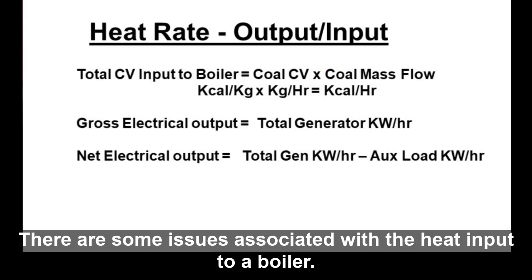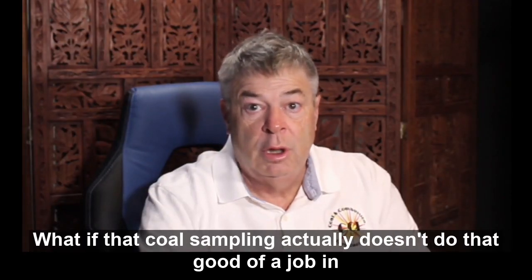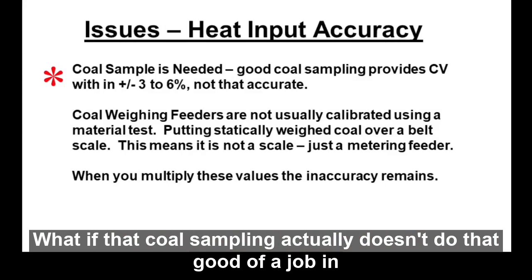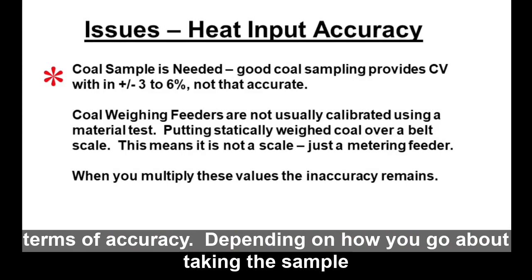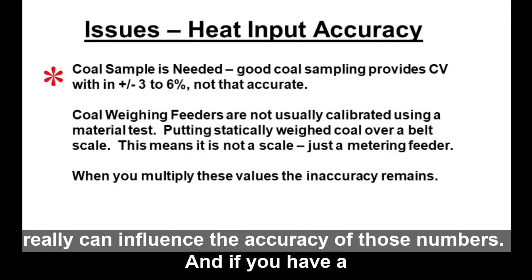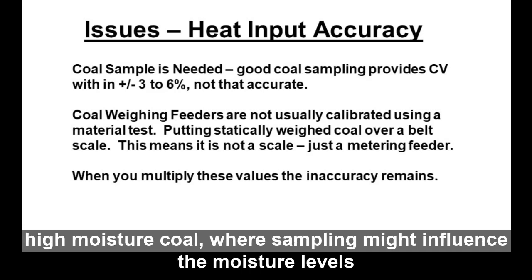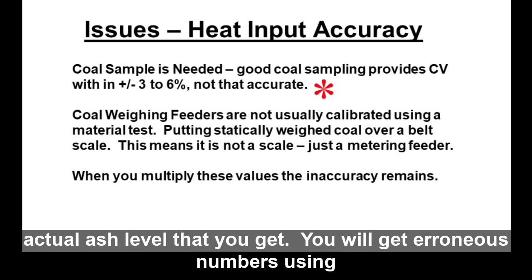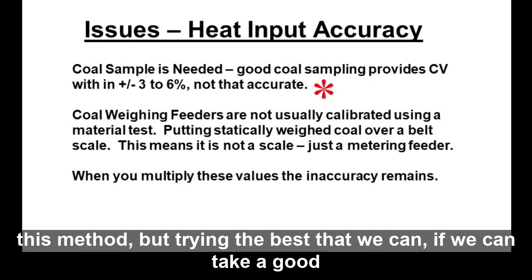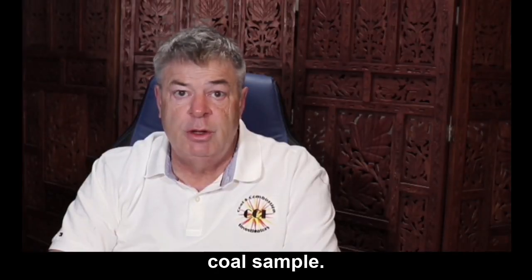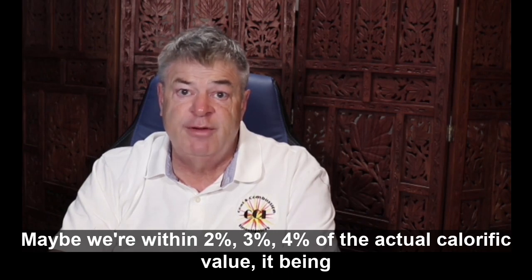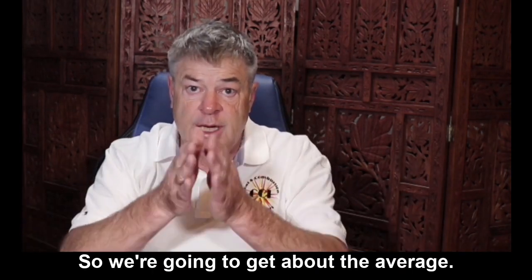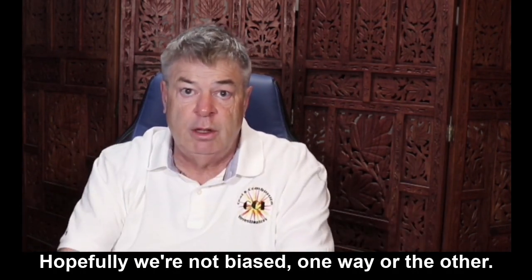There are some issues associated with heat input to a boiler. Coal sampling doesn't do a very good job in terms of accuracy — depending on how you take the sample really influences those numbers. With a high moisture coal, sampling might affect moisture levels; with a high ash coal, it might affect ash levels, giving you erroneous numbers. Trying our best, with a good coal sample, we might be within two to four percent of the actual calorific value.